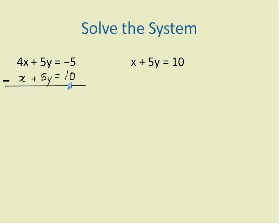I'm going to subtract all of my values on the bottom from the numbers on the top. And that's going to help me to eliminate my variable of y. 4x minus x gives me 3x. 5y minus 5y gives me 0. Negative 5 minus 10 gives me negative 15.